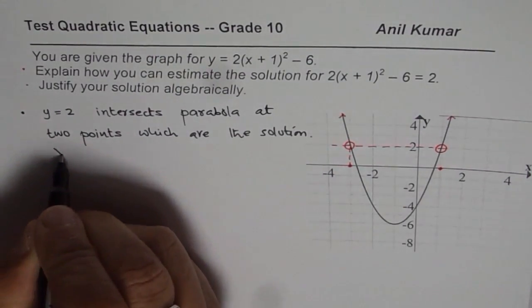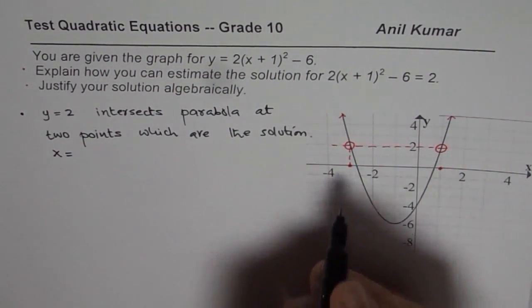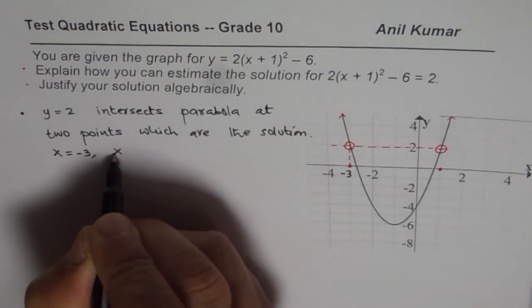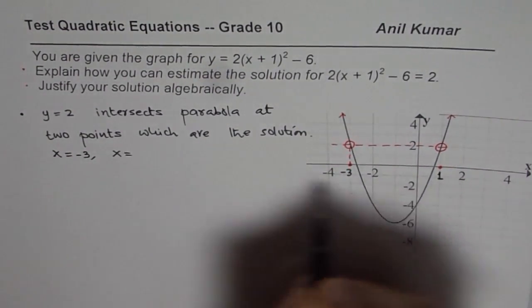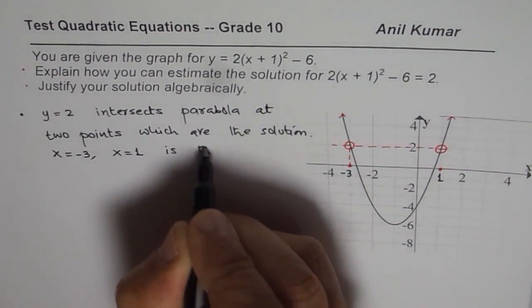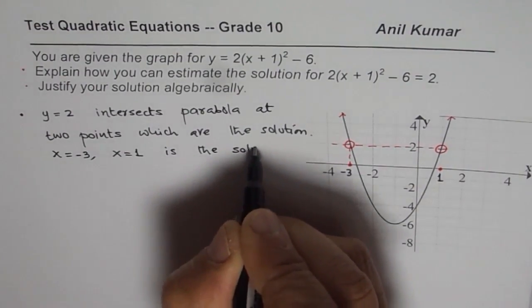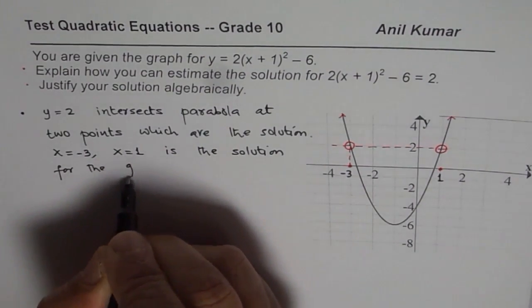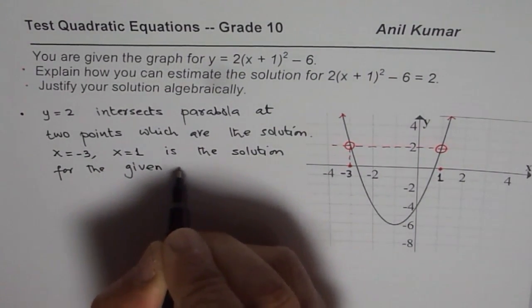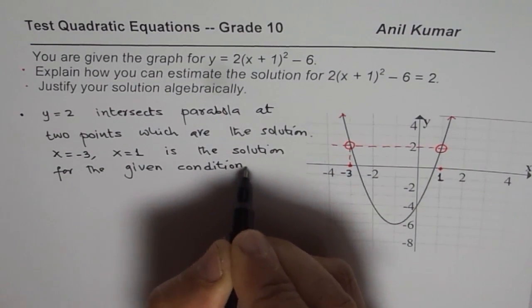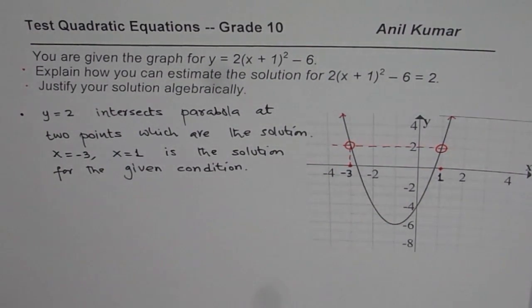So the solution here is x equals to the value of x, which is -3. Do you see, x equals to -3 and x equals to this value is 1. x equals to 1. So that is the solution for the given condition. So that is how you can communicate your explanation. So that is the first part.